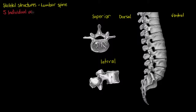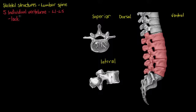Now our lumbar spine is made up of five individual vertebrae that are freely articulating with each other, and they are the L1 to L5 vertebrae that I've just highlighted here in red.